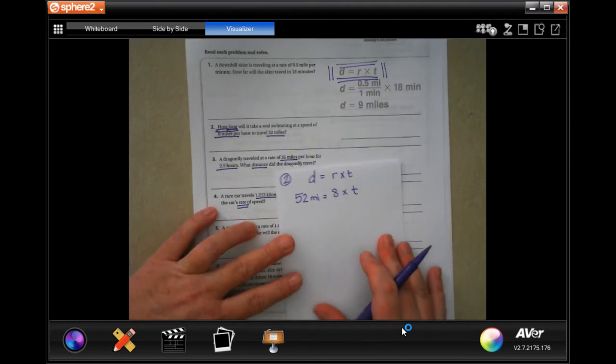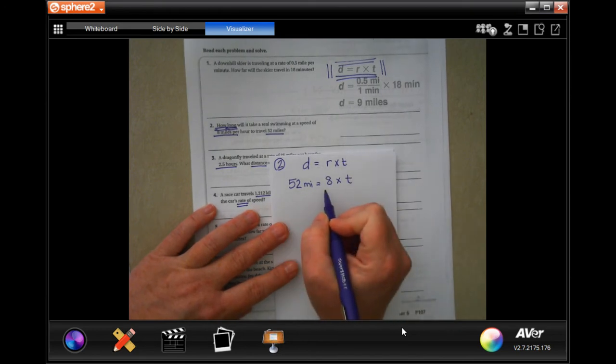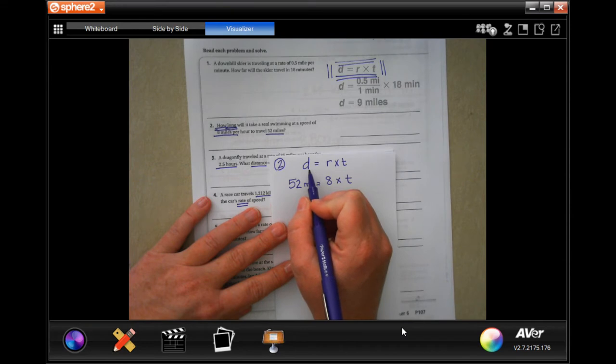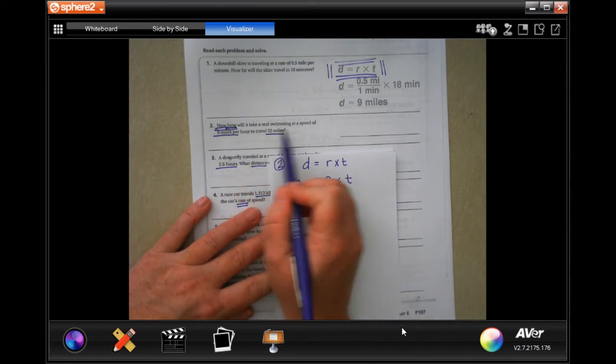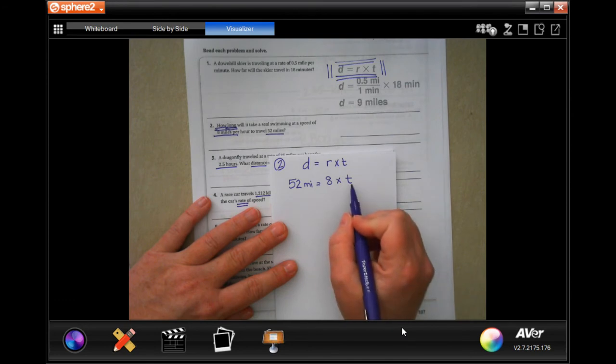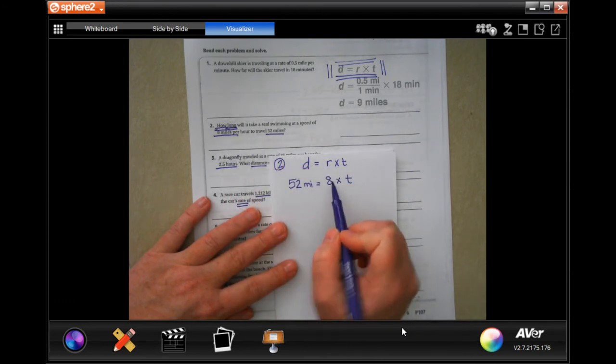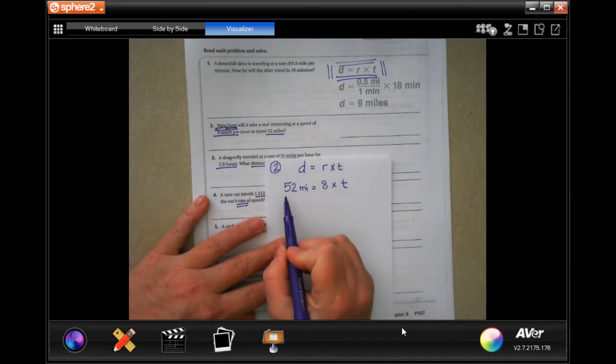You'll notice that at the top of your paper under number 1, it gives you a formula. Distance equals rate times time. So we are going to go ahead and do number 2. We're just plugging it in the right spot. At the top of all of these, I wrote distance equals rate times time. How long will it take a seal swimming? So it wants to know the time. 8 miles an hour, that's our rate, to travel 52 miles. That's our distance.